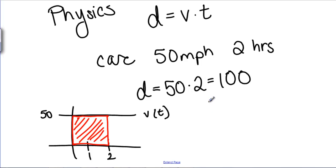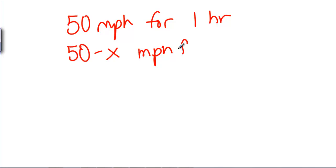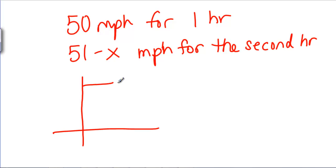And we can generalize this. If we say you went 50 miles per hour for one hour, and then you started slowing down, say you went 50 minus x miles per hour, maybe we better make it 51 minus x so we get a continuous function, for the second hour. Then our graph would look like this: starts at 50, and then it starts decreasing at 1.